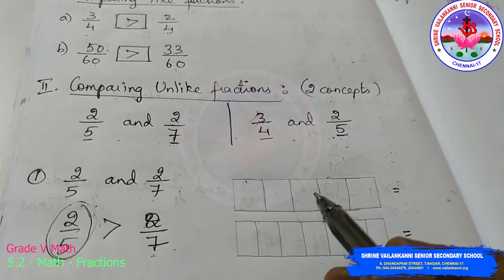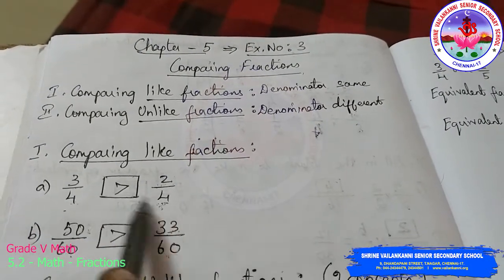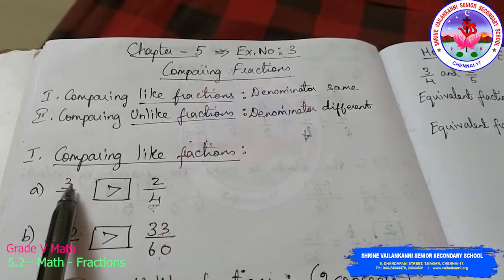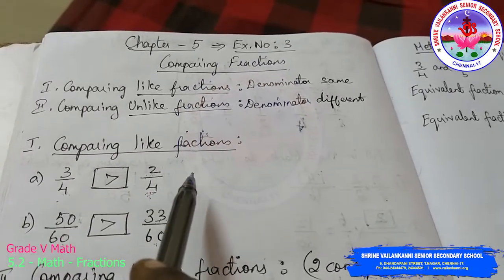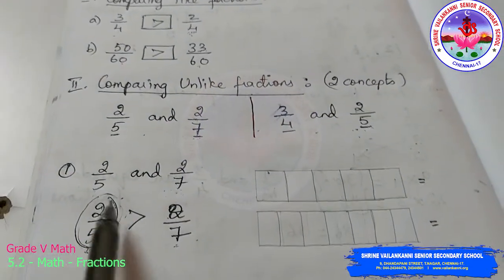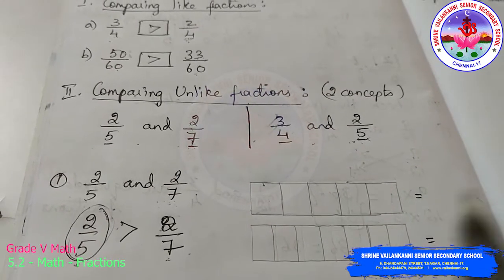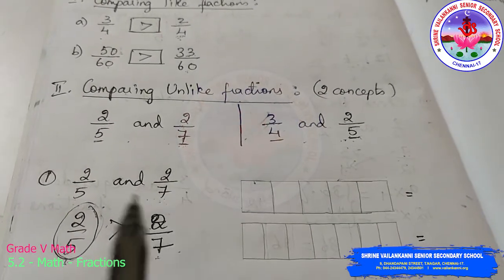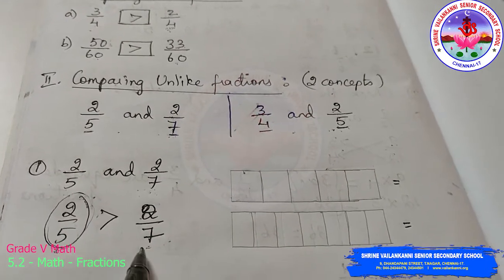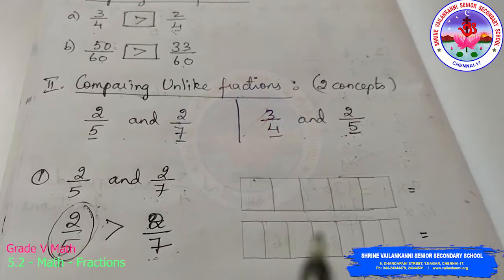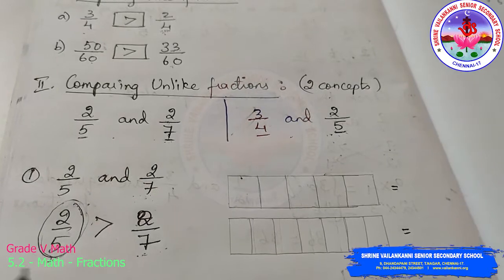In like fractions, when denominators are the same, you compare the numerators — whichever is greater, that is the greater fraction. But here the denominators are different and the numerators are the same. When you have the same numerators in an unlike fraction, you compare the denominator values. Whichever denominator value is smaller, that whole fraction is treated as the greater value.